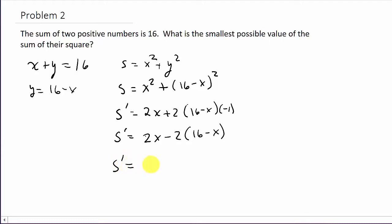So s prime is 2x minus 32 plus 2x. And so I get s prime is 4x minus 32. So we'll set that equal to 0. 4x minus 32 equals 0. And so we get x is equal to 8.